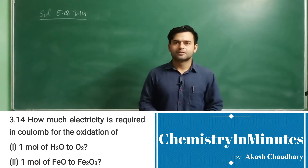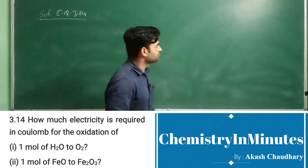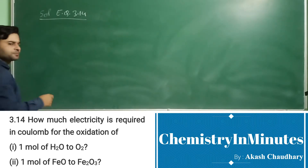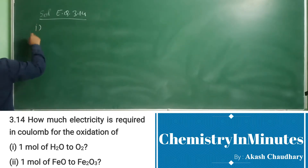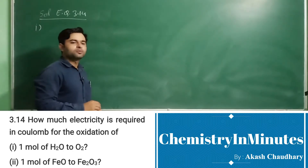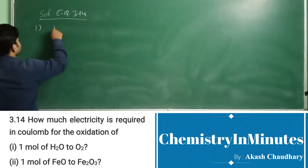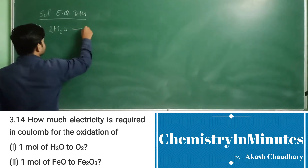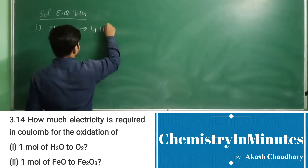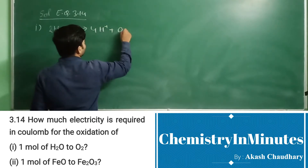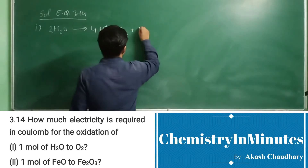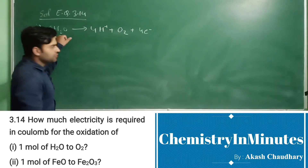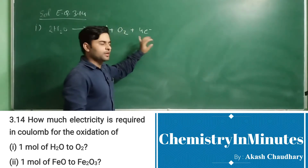Let's start solving this. Solution to exercise question 3.14. The first part: oxidation of H₂O₂ is written as 2H₂O₂ gives 4H⁺ plus O₂ plus 4 electrons. From the reaction you can see 2 moles of H₂O₂ requires 4 moles of electrons.